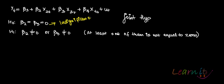If you are not able to reject your null hypothesis, it means that you are not able to say with sufficient evidence that beta 2 or beta 3 is not equal to 0. It means that they are insignificant and you should be removing them from the model.